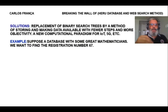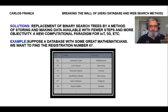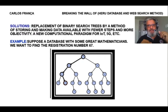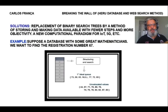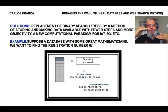For example, suppose a database with some great mathematics. You want to find registration number 67. Here, using B3, the search needs four steps to find registration number 67. Four steps. Now, what about using my method? My method needs only three steps.